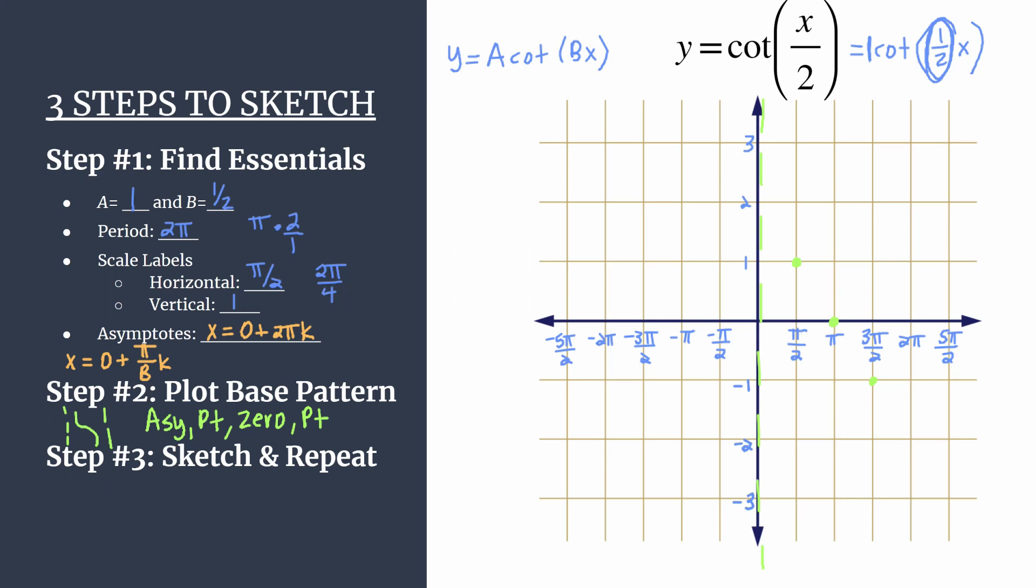Step 3 is to sketch and repeat. So let's go ahead and sketch this in. Here is one cycle of y equals cotangent x over 2. And now I'll switch to another color. I'll switch to purple, and we'll just repeat this pattern for as much space as we have.